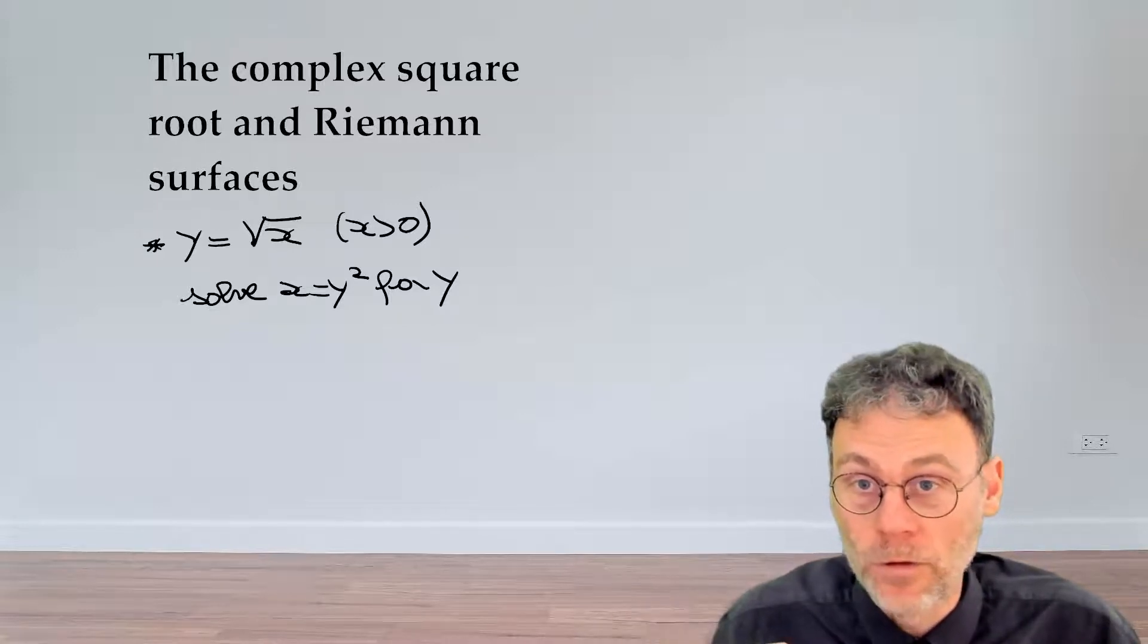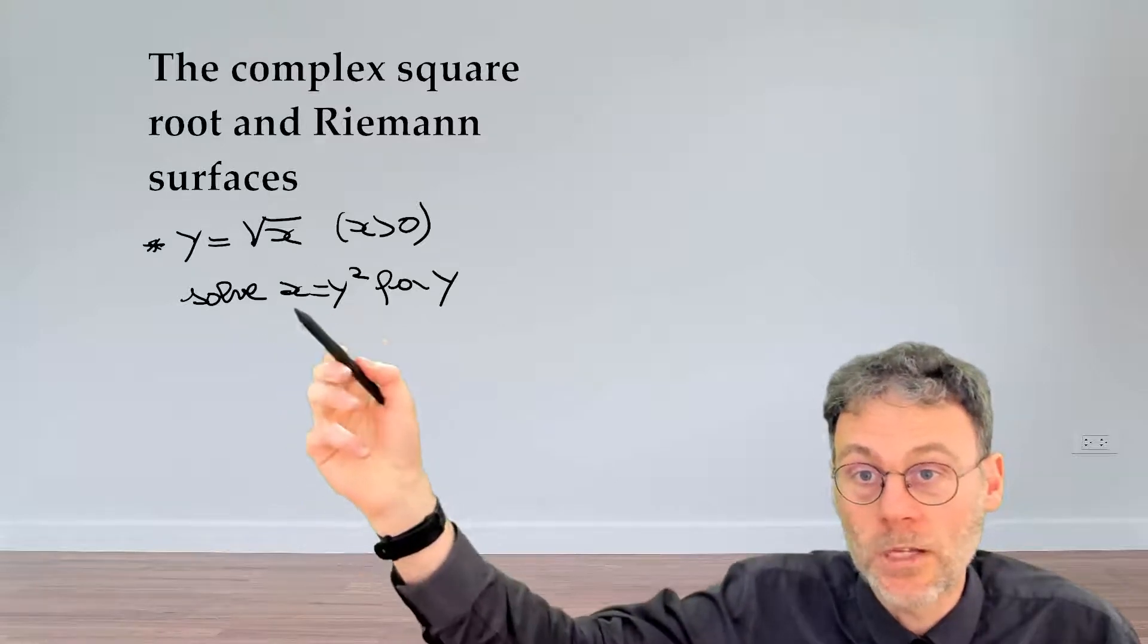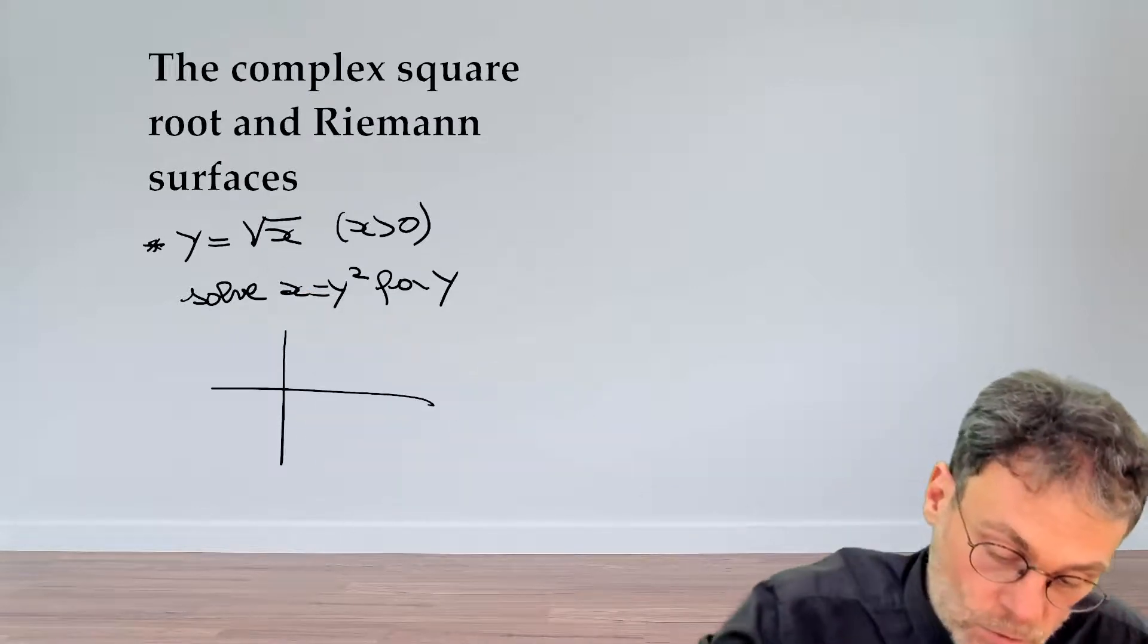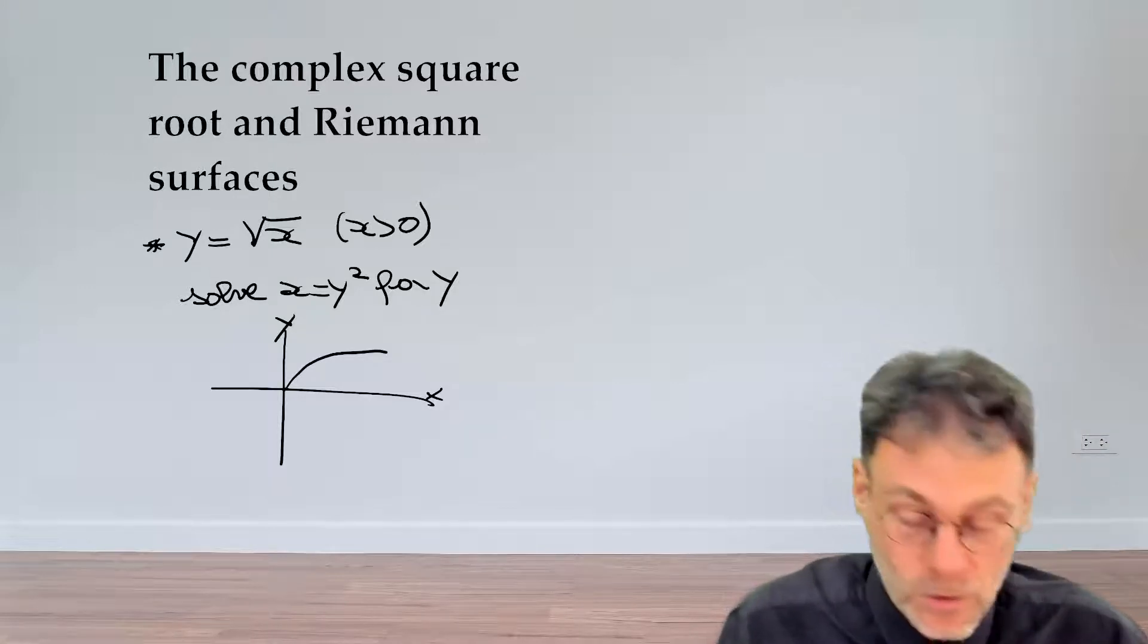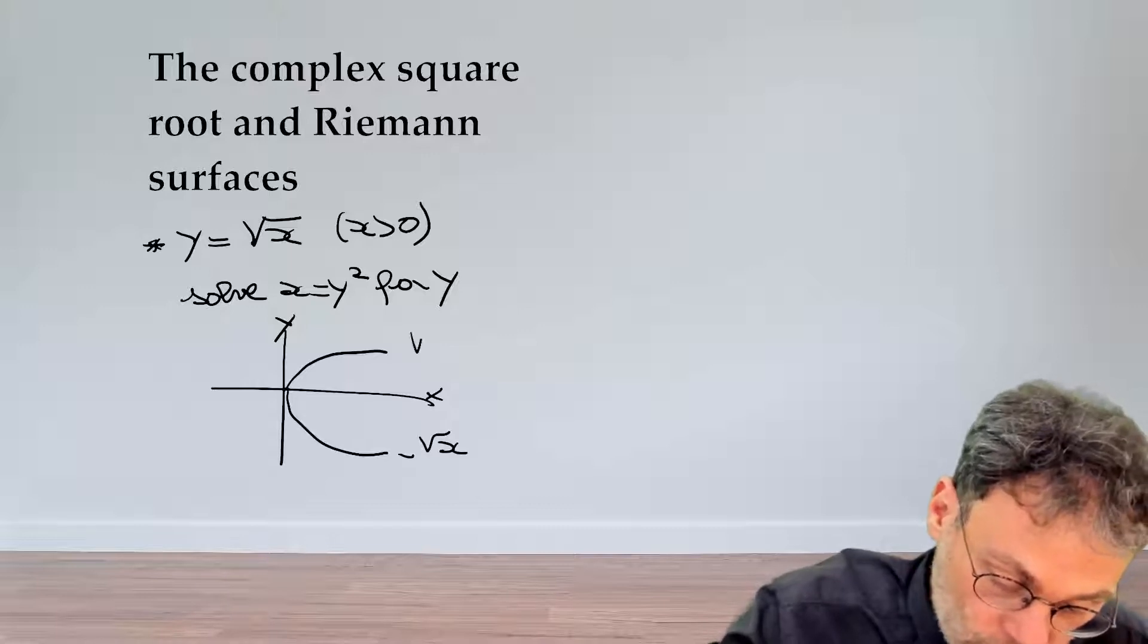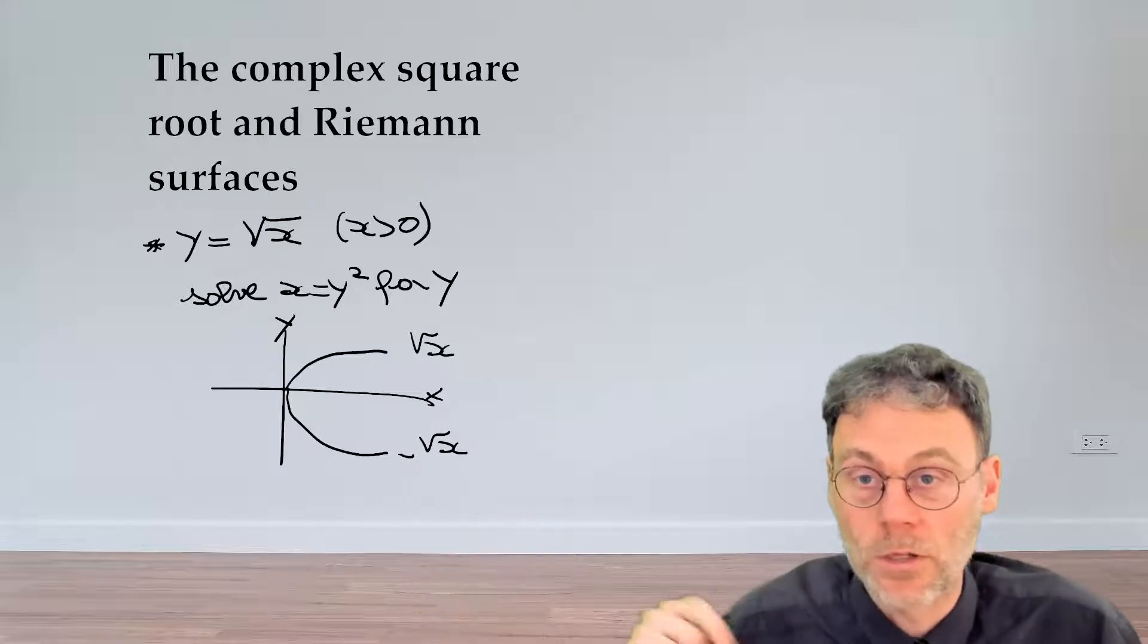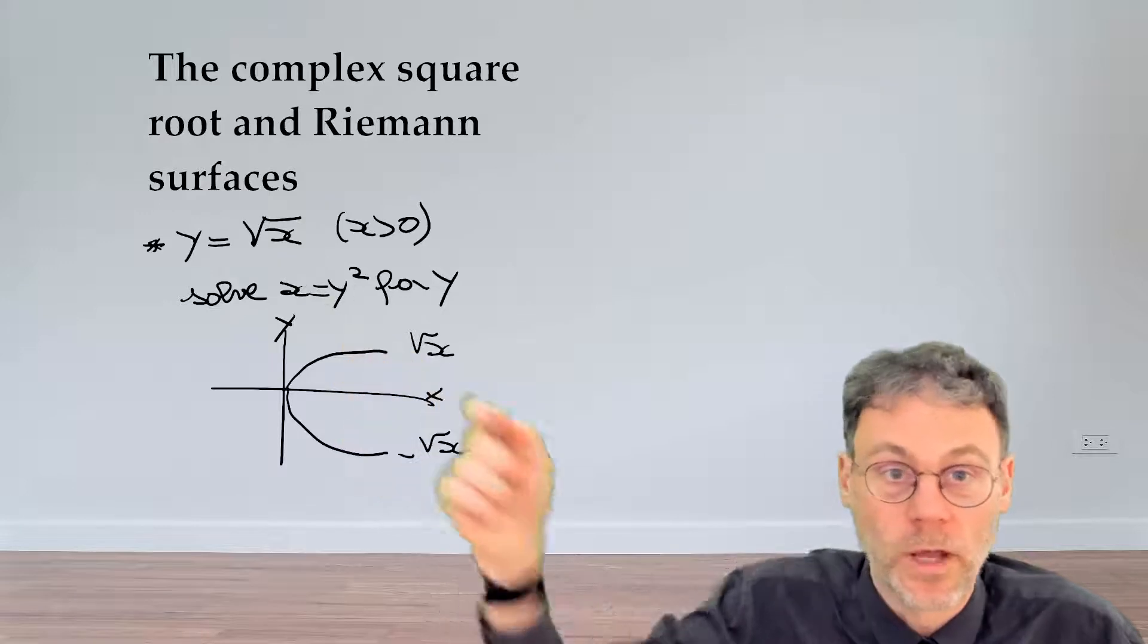But something we often sweep under the rug, or often forget, is that when we solve this equation for y, there's actually two solutions. Not only do you have y equals the square root of x, but we often forget that there's also a second solution, namely minus the square root of x. Obviously, if you square this thing, minus 1 squared will just give you plus 1. So both of these are solutions to that equation.